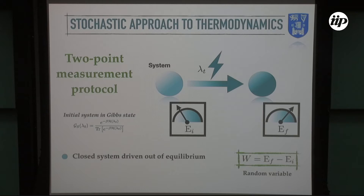As many of you know, and as was also the topic of some of the talks here at this meeting, work in the quantum realm is not an observable. There can be many ways of defining work, but what is customarily done in the stochastic approach is to define it by means of a two-point measurement protocol, as Eric was also mentioning before. Let me refresh some of the basic ideas behind it.